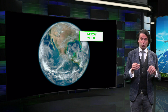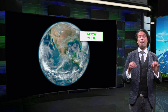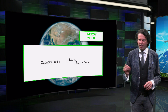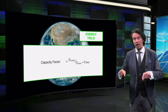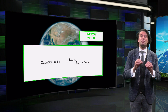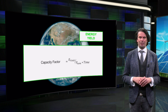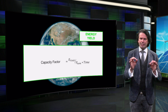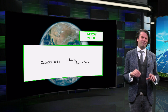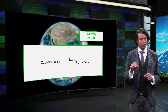How much the actual yield deviates from the nominal output is represented by the capacity factor, which is equal to the energy yield divided by the nominal output multiplied by the time interval. The capacity factor represents the practical losses of a renewable energy system. These concepts may seem vague now, but they will become very clear once we apply them to the technologies discussed this week.